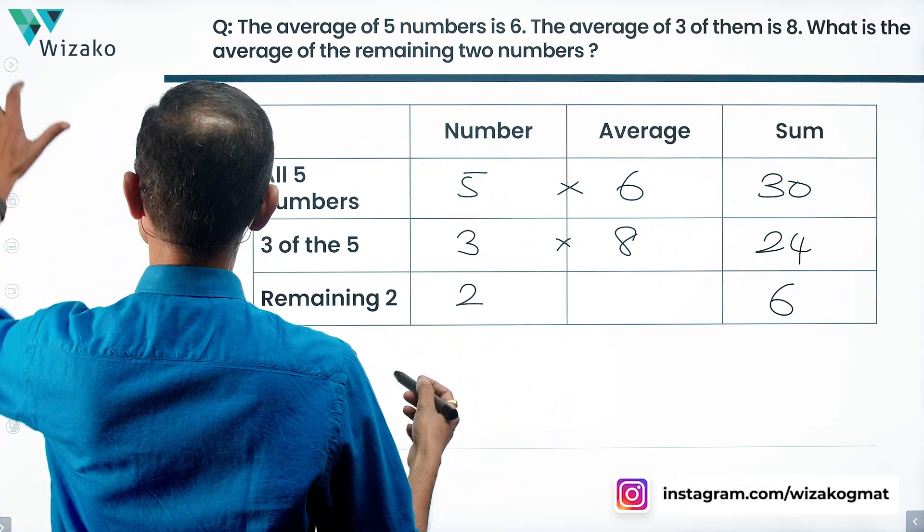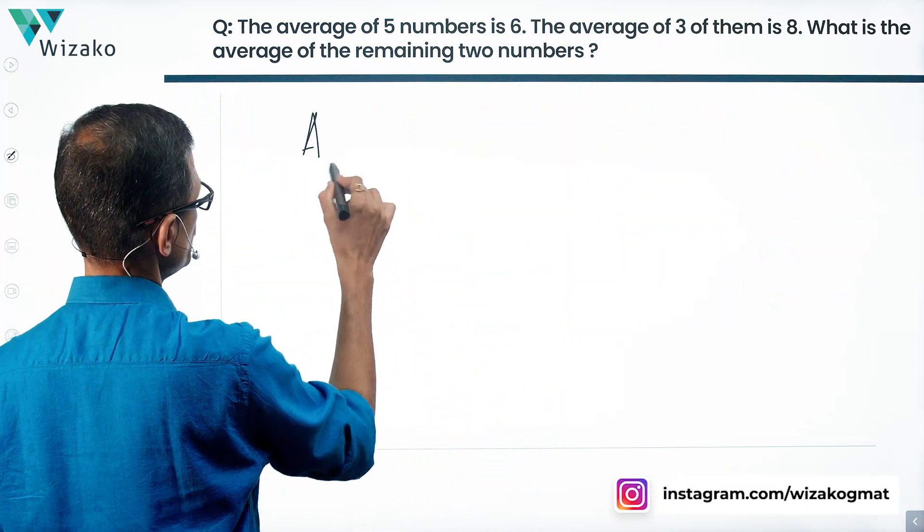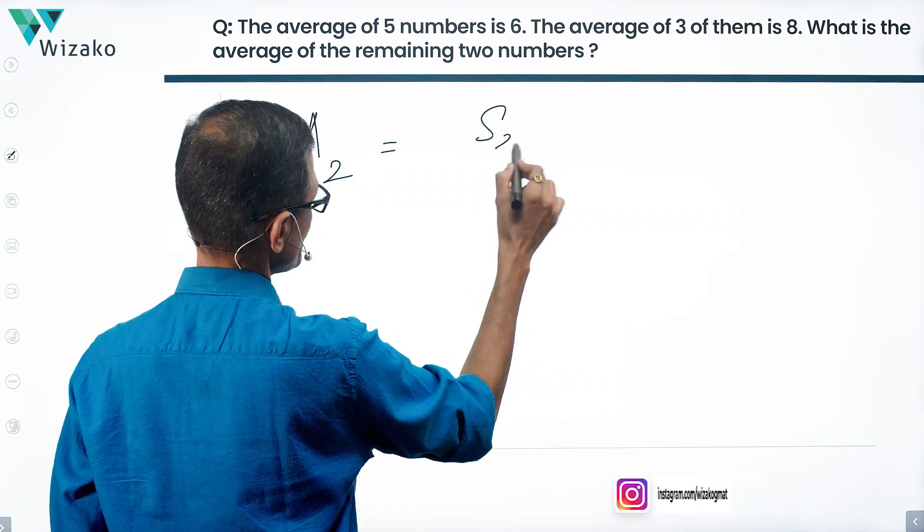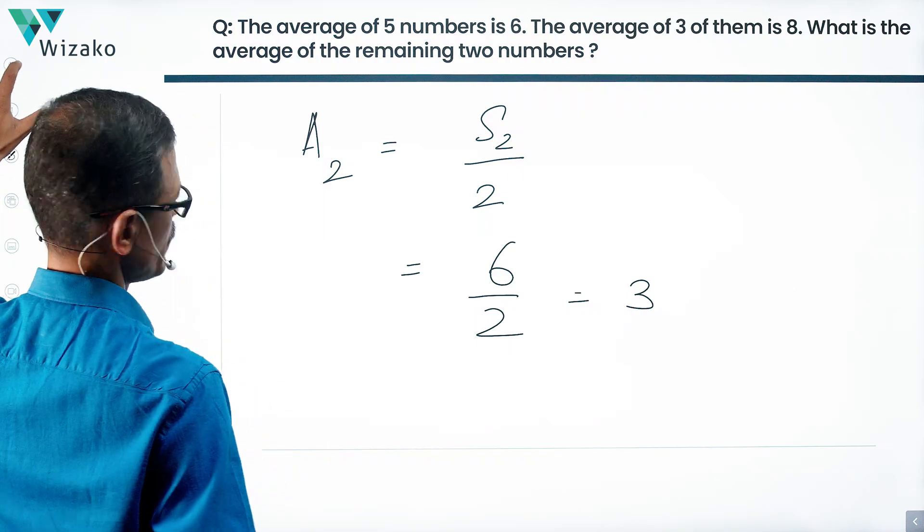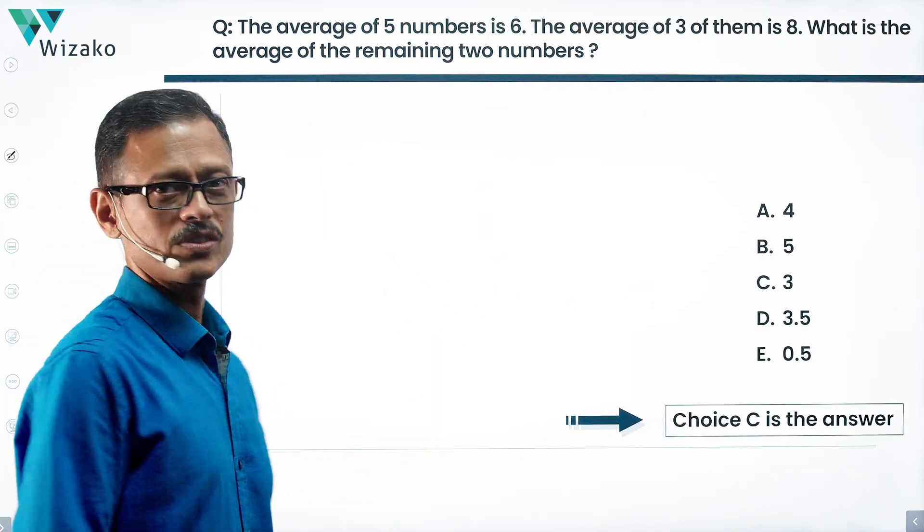The average of these remaining two numbers is equal to the sum of those two numbers divided by 2. 6 divided by 2 is equal to 3. Very simple question. Choice C is the correct answer to this question.